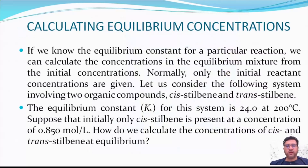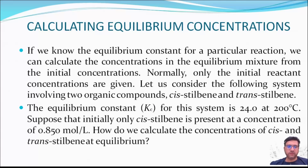If we know the equilibrium constant for a particular reaction, we can calculate the concentrations in the equilibrium mixture from the initial concentrations. Consider the system of cis-stilbene and trans-stilbene. The equilibrium constant for this system is 24 at 200°C, and the initial concentration of cis-stilbene is 0.850 mol/L. We can calculate the concentration of trans-stilbene at equilibrium.